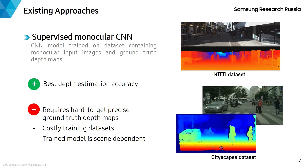Ground truth depth maps are collected using the aforementioned depth sensors. Such training datasets are very costly to collect or lack depth map quality, which often restricts the variability of the training dataset, thereby making the trained model quite scene-dependent.